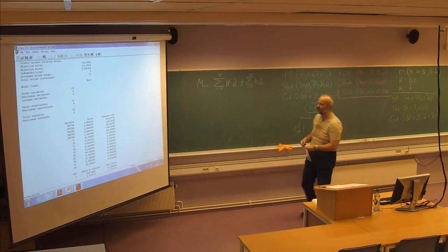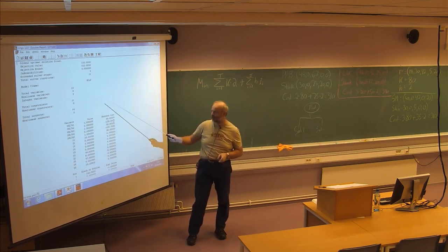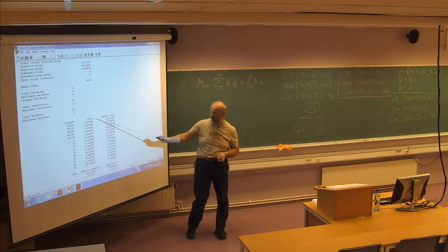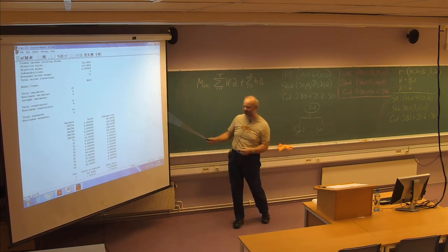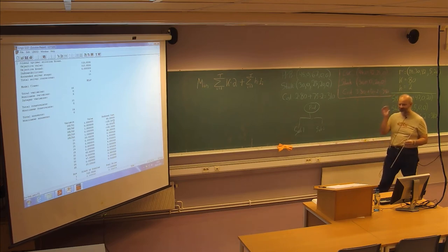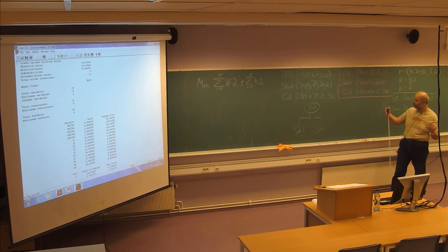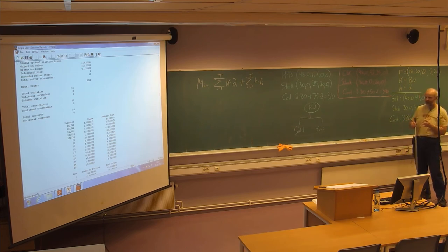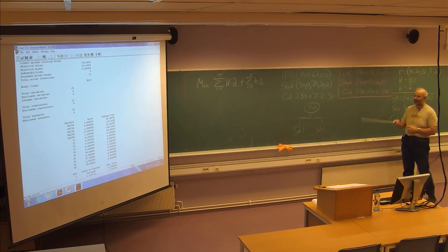Here it's possible to get two different solutions which have an objective value of 310. The Lingo solver returns one of them — similar to the silver meal solution — even if we found that the part period balancing solution has the same objective value. The optimizer uses mathematical methods and returns the first solution it finds; it doesn't tell you if there are any others. In optimization problems there might be millions of different solutions, and there could be several at the same objective level.